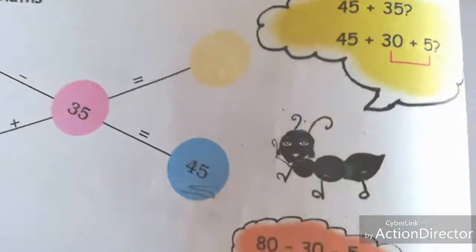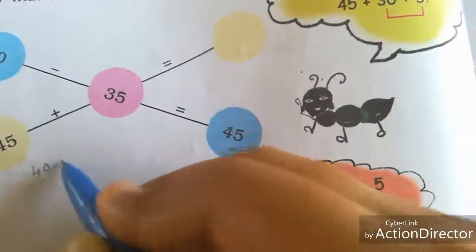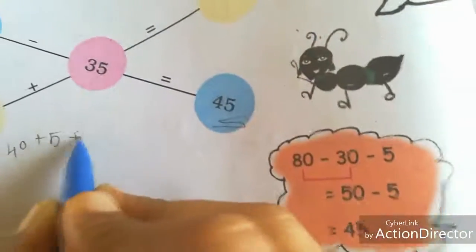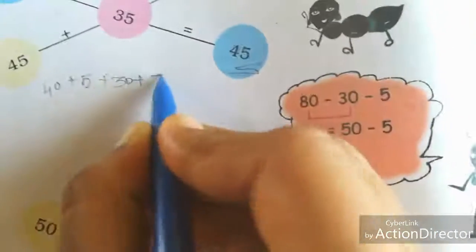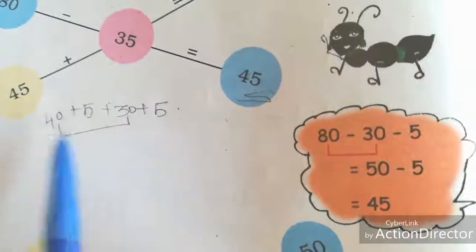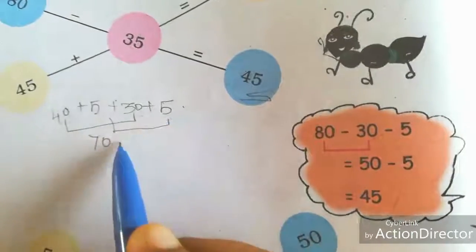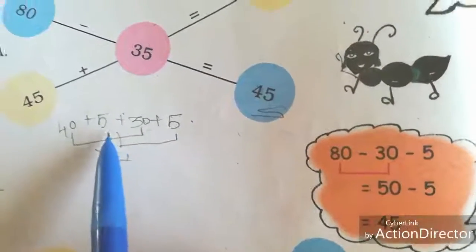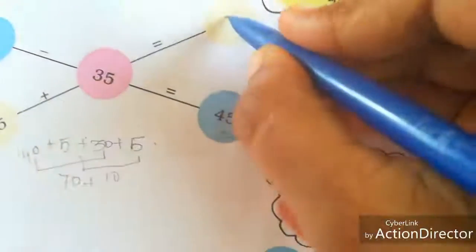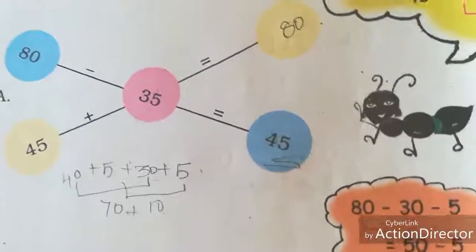Next, we split in the same way. 45 becomes 40 plus 5, and 35 becomes 30 plus 5. First we add 40 and 30, that is 70. Then 70 plus 10 is 80. In this way, if you add like that, it is easy for you.